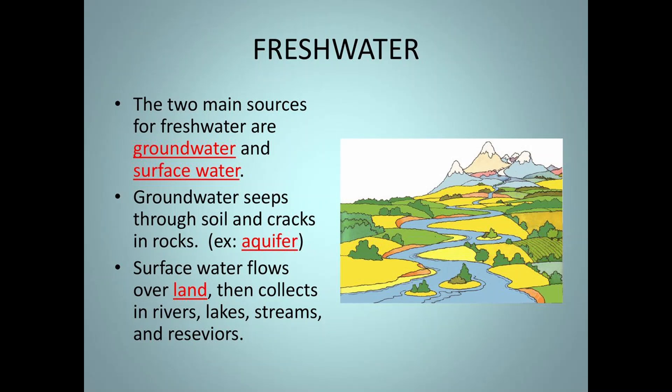There are two main sources of fresh water: ground water and surface water. Ground water seeps through soil and cracks in rocks. This water is taken out by digging wells or bore wells. Surface water flows over land and then collects in rivers, lakes, streams and reservoirs.